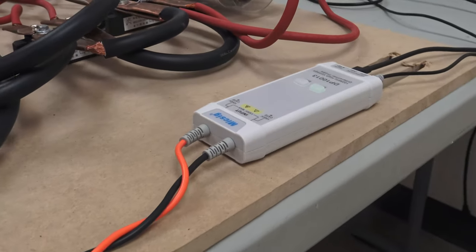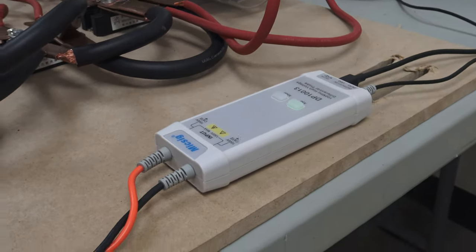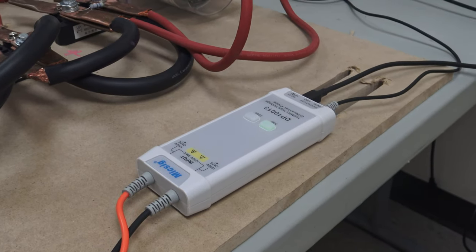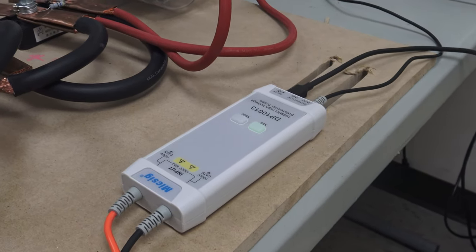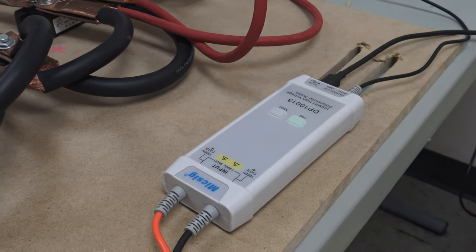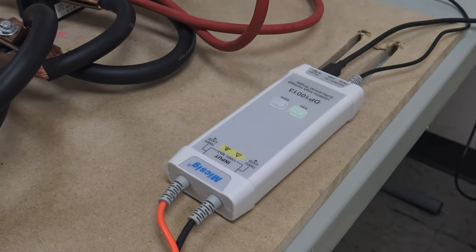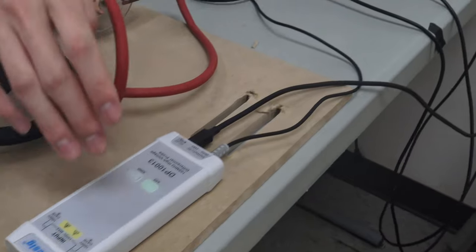And this differential probe essentially has some op amps and stuff inside, and it allows us to probe any parts in our circuit without having to worry too much about where the ground is.